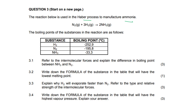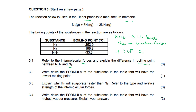3.1, they want us to refer to the intermolecular forces and explain the difference in the boiling point of ammonia and nitrogen. So we first look at the intermolecular forces between the molecules. In ammonia, the intermolecular forces are hydrogen bonds. In nitrogen, we have London forces or induced dipole forces. We know that hydrogen bonds are stronger intermolecular forces than London forces. Therefore, ammonia will have a higher boiling point than nitrogen.